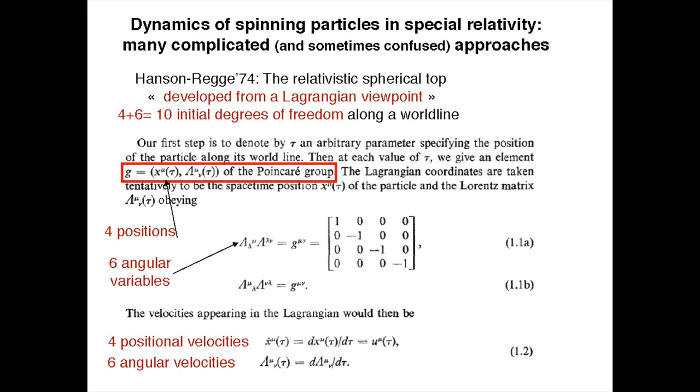What they mean by this — and this is the problem — is that they start with four degrees of freedom, the position in spacetime for the particle, plus the four velocities, so you already have a phase space with eight dimensions. To describe the spinning particle, they say that along the world line you need a Lorentz frame, so you need an element of the Lorentz group lambda-mu-nu to define the angle — six parameters — and then the angular velocities, the time derivatives of these six parameters, which means an additional six. So you start with a phase space, if I dare use the word, of 20 dimensions.